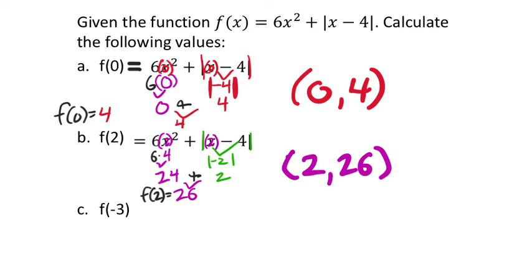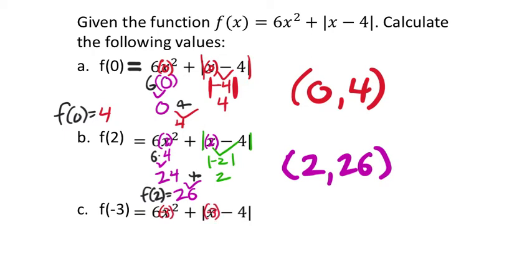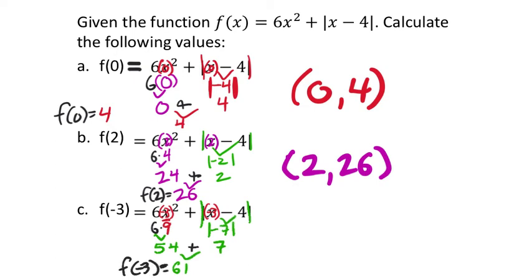Finally, f(−3) for the same function. Replace x with −3: 6(−3)² + |−3 − 4| = 6(9) + |−7| = 54 + 7 = 61. So f(−3) = 61, which gives us the ordered pair (−3, 61).